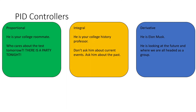Then you have the derivative. If the history professor is keyed into the past, well, your buddy Elon Musk is looking at the future — where are we all headed, is it good or bad, and are we moving fast or slow in whatever direction we're going? So you have past, present, and future represented in all three of these personalities.